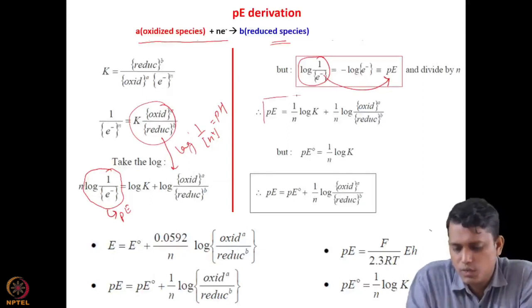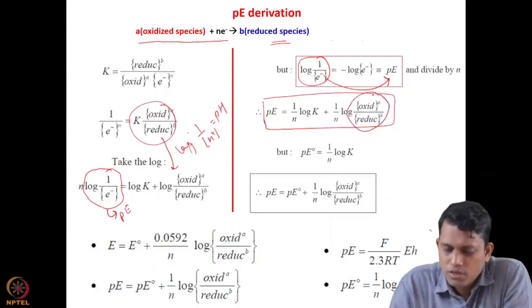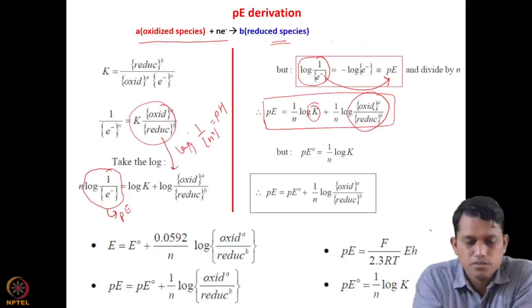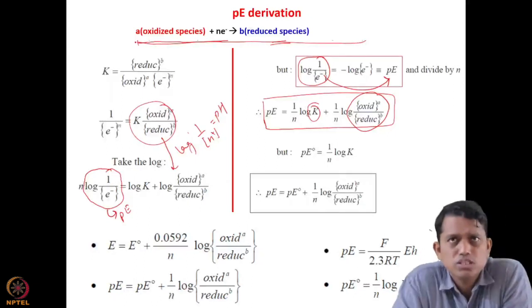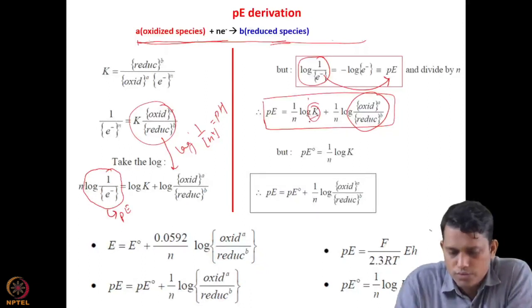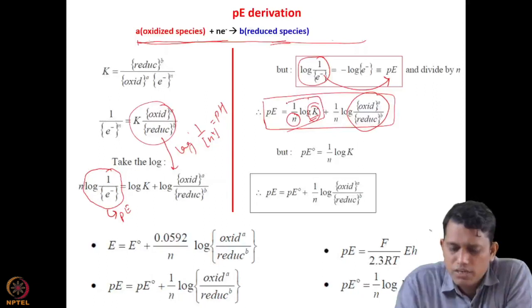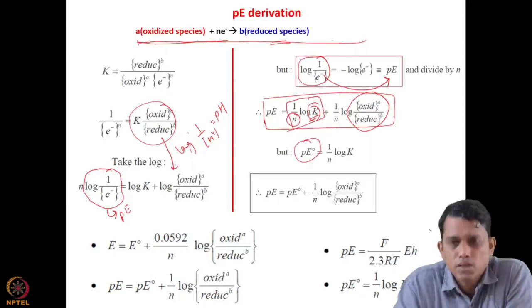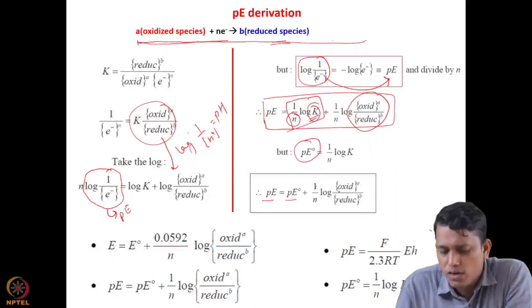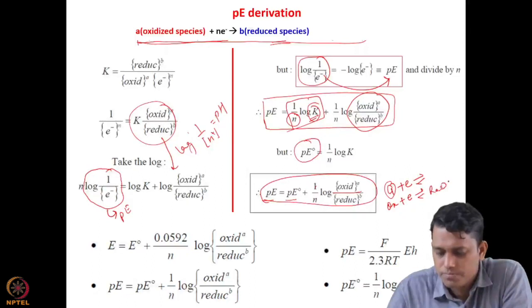From this derivation, PE is nothing but (1/N) log K plus (1/N) log of oxidized over reduced species. Since log K/N is a constant for a given reaction (defined as PE°), we can write PE equals PE° plus (1/N) log([oxidized]/[reduced]). This is analogous to the Nernst equation E equals E° plus (0.0592/n) log([oxidized]/[reduced]). Comparing these two equations, we find the relation between PE and EH is PE equals (F/2.3RT) × EH.